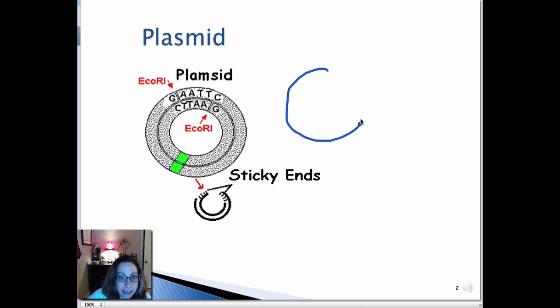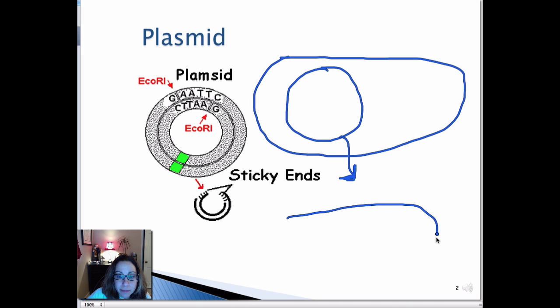So you have these circular plasmids inside of a bacterial cell, and these plasmids can move outside of the bacterial cell. When bacteria lyse, they can be released, and then a nearby bacterial cell can take up that plasmid.